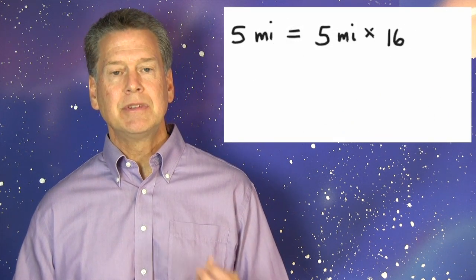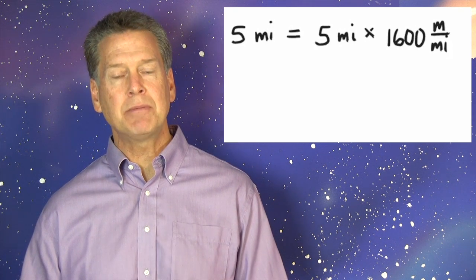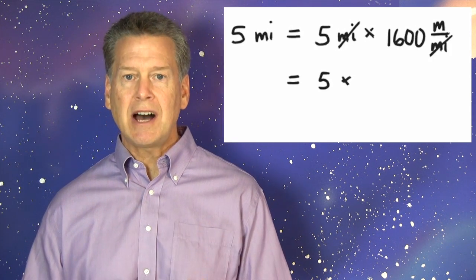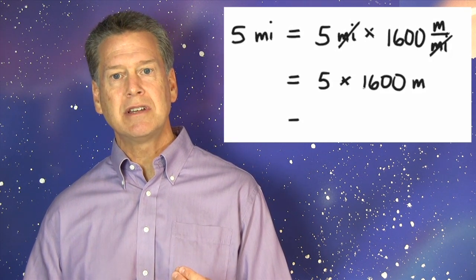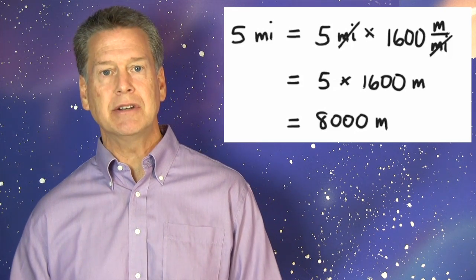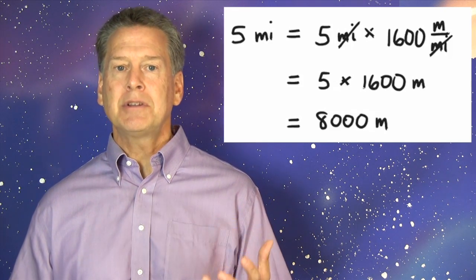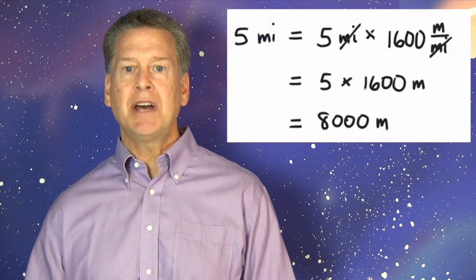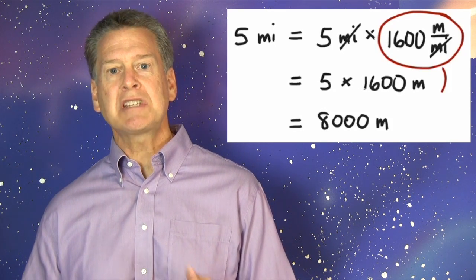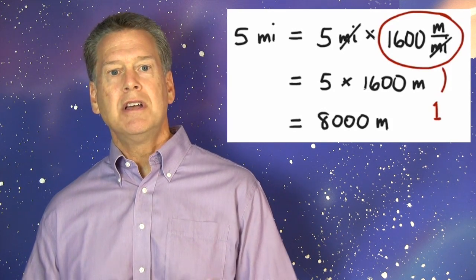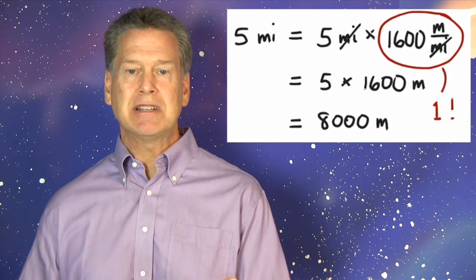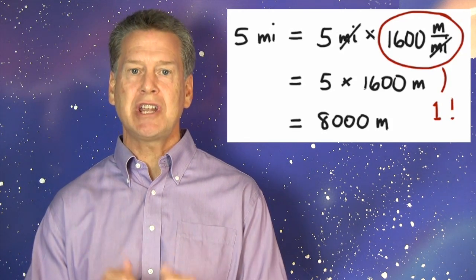Five miles times 1,600 meters per mile equals 5 times 1,600 meters equals 8,000 meters. Notice that when we multiply by 1,600 meters per mile, we are just multiplying by 1. So we don't really change the distance of 5 miles, we just change its units.